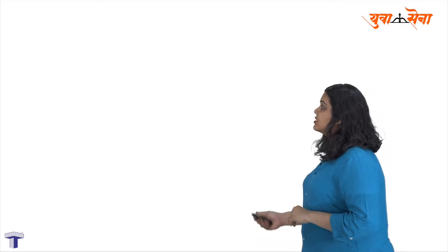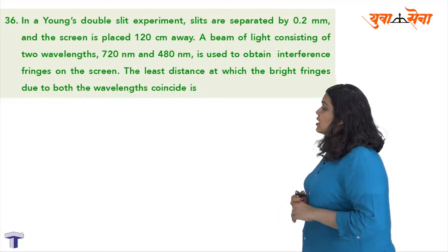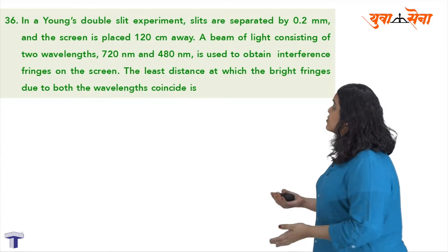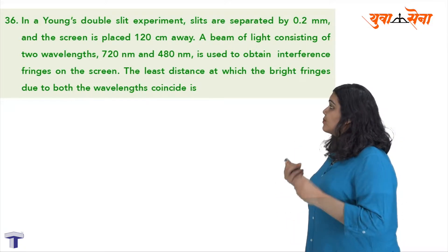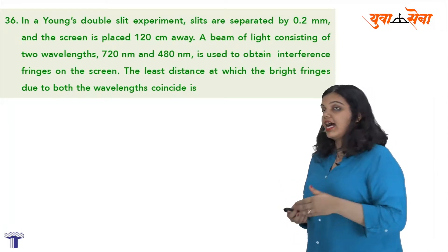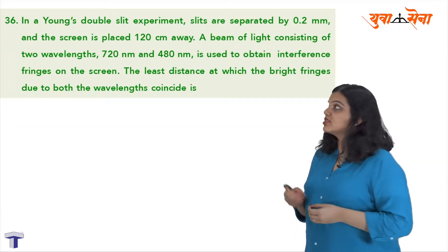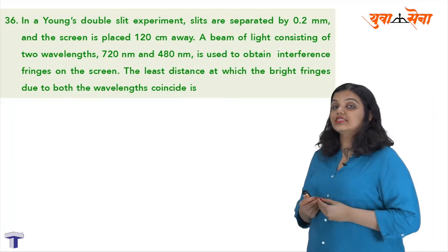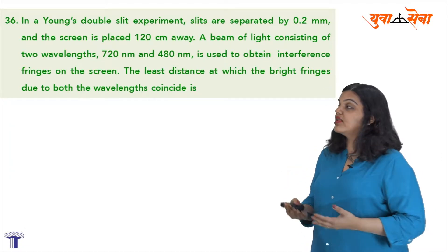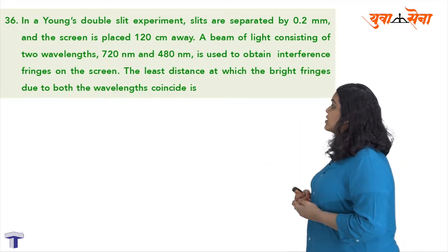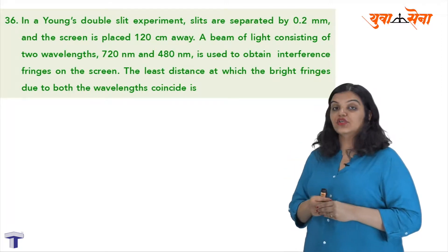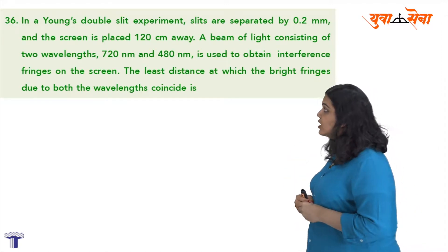Hello everyone, let's take a look at question number 36. Question number 36 says that in a Young's double slit experiment, slits are separated by 0.2 mm and the screen is placed 120 cm away. A beam of light consisting of two wavelengths, 720 nm and 480 nm, is used to obtain interference fringes on the screen.